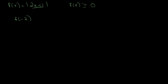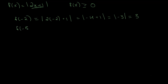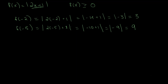Let's try inputting negative 2. We take f(negative 2), which equals the absolute value of 2 times negative 2 plus 1, which is the absolute value of negative 4 plus 1, equal to the absolute value of negative 3, which equals 3. For f(negative 5), we get the absolute value of 2 times negative 5 plus 1, which is the absolute value of negative 9, equal to 9.